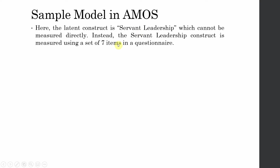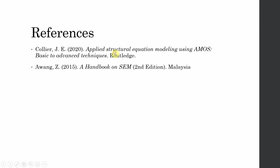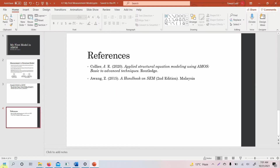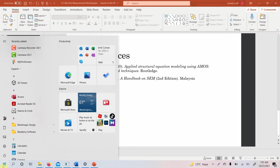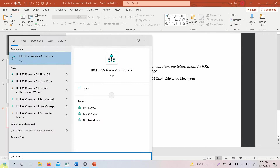The sample model in AMOS for this example uses servant leadership, which cannot be measured directly. Instead, the servant leadership construct is measured using seven items in the questionnaire. If you want to learn more about AMOS, you can refer to the recommended books. Now we are going to practically look at how to develop this model in AMOS.